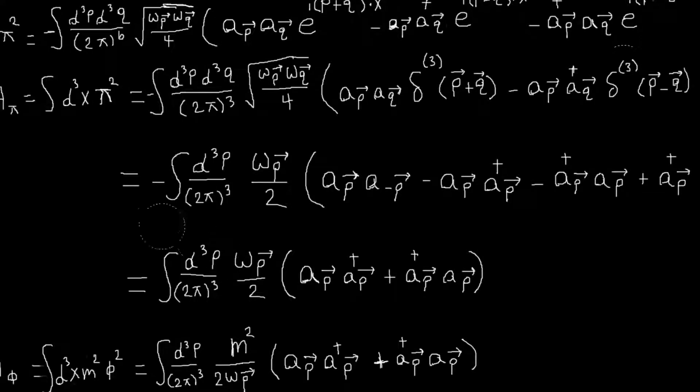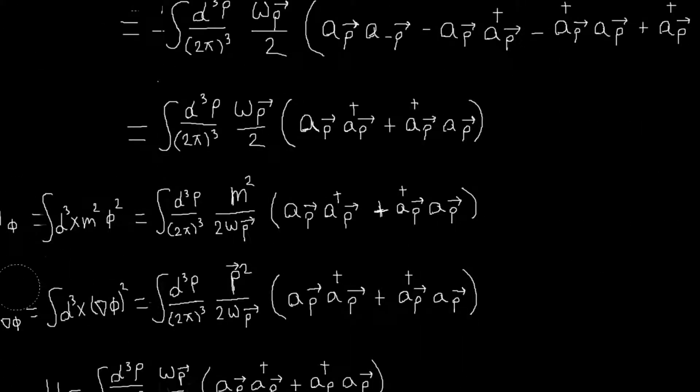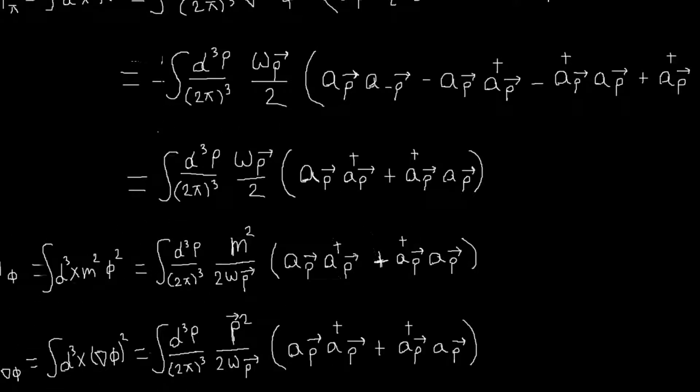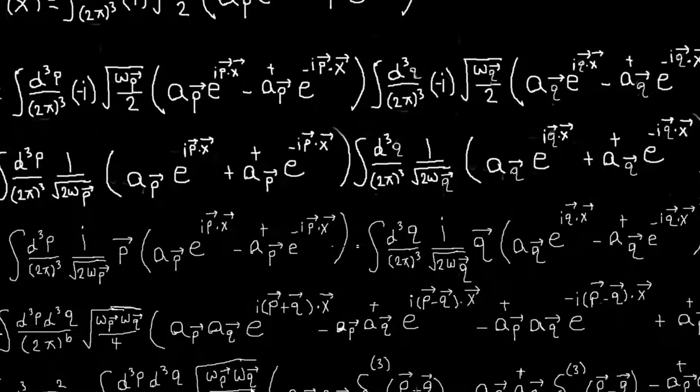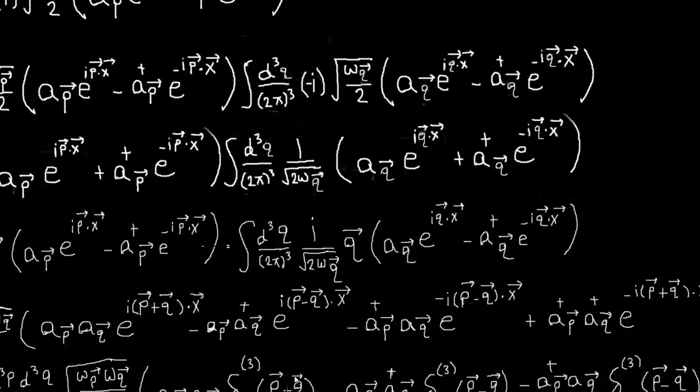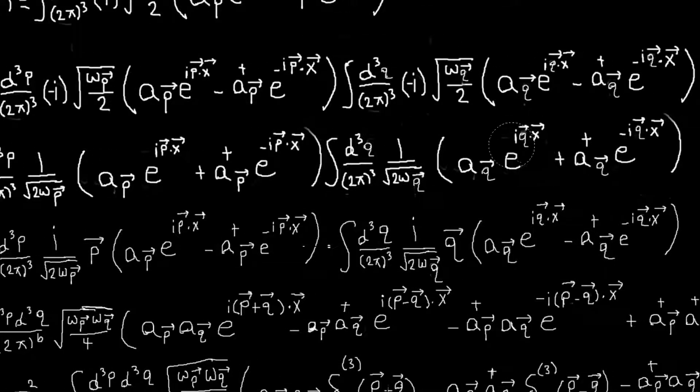So the other two terms that I'll call h_phi and h gradient phi, they work out in pretty much the same way. In fact, you could kind of just read off what they would be. You don't even have to do all the math. So phi, for example, we just saw that this term will have an e to the i p plus q dot x, but that will lead to replacing q with minus p, and then those terms go away anyway, which I just showed.